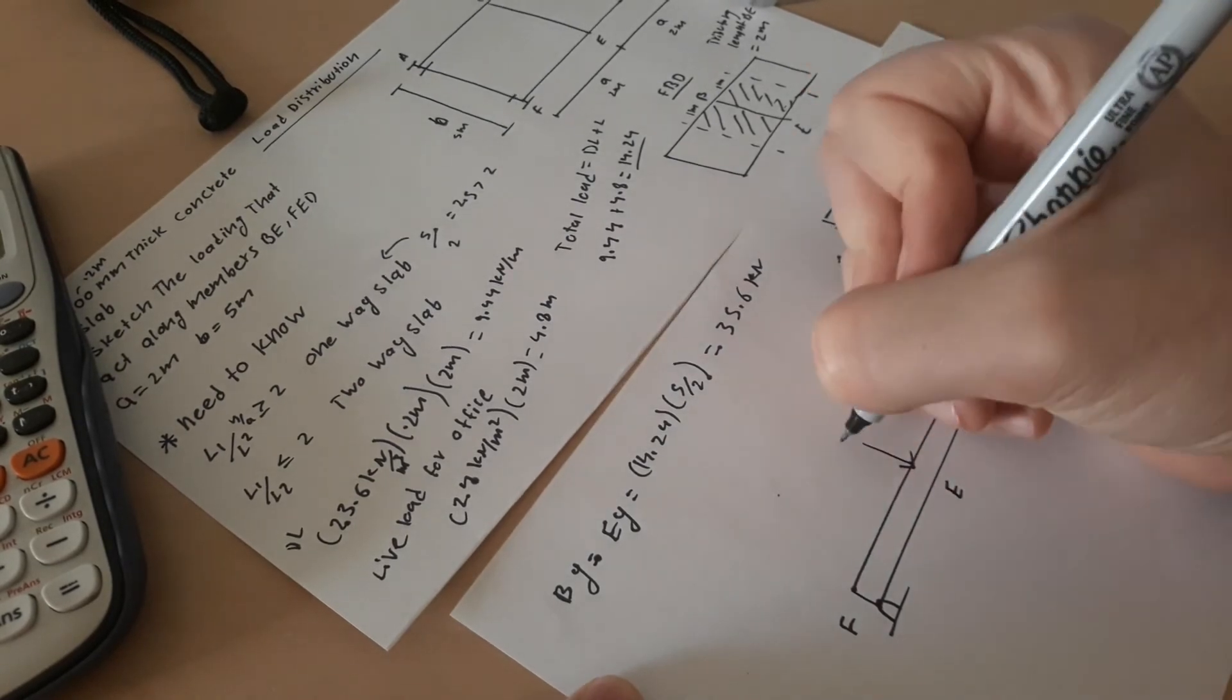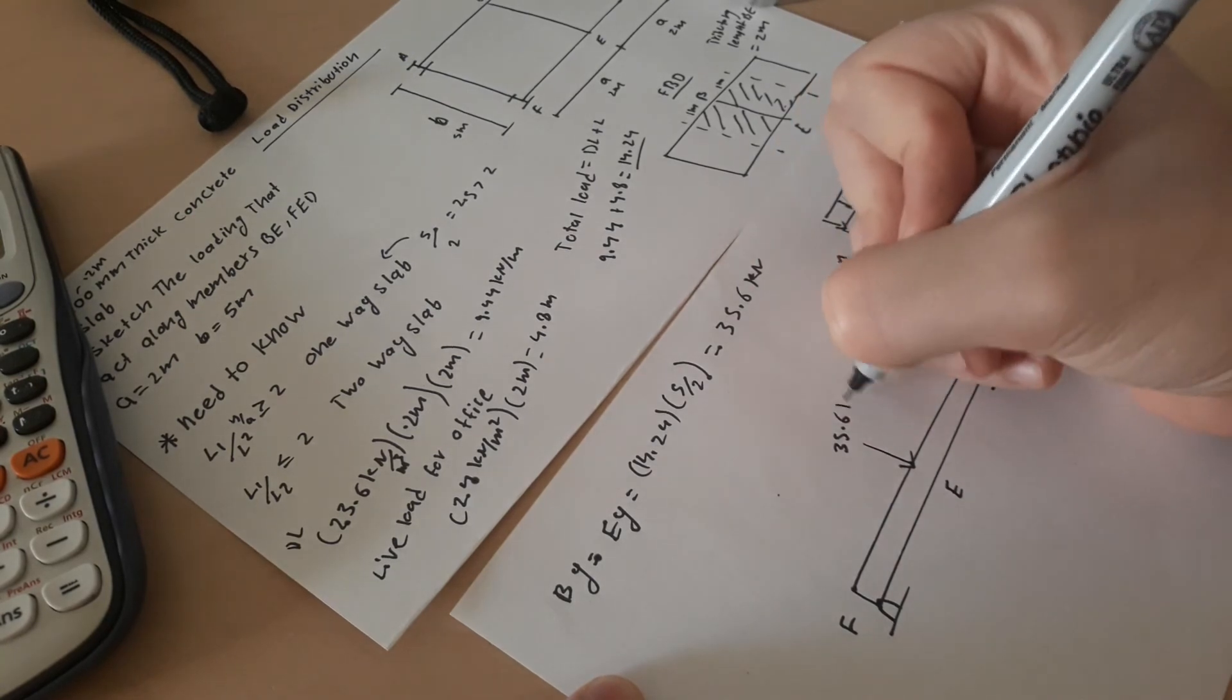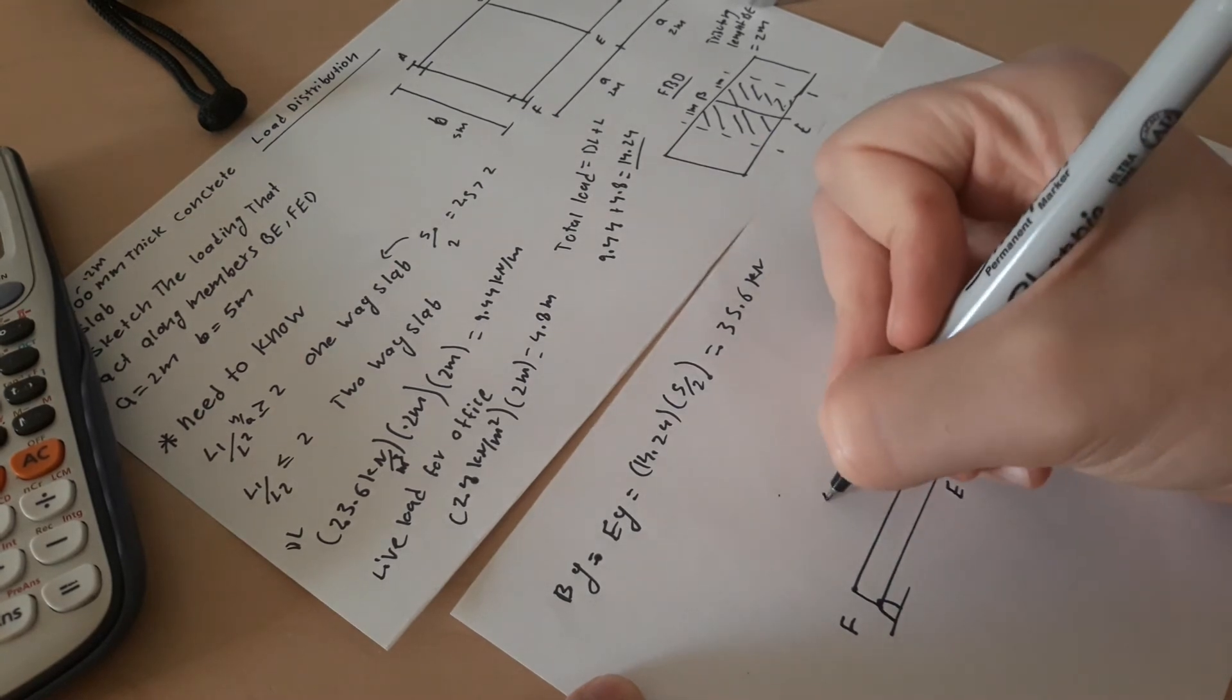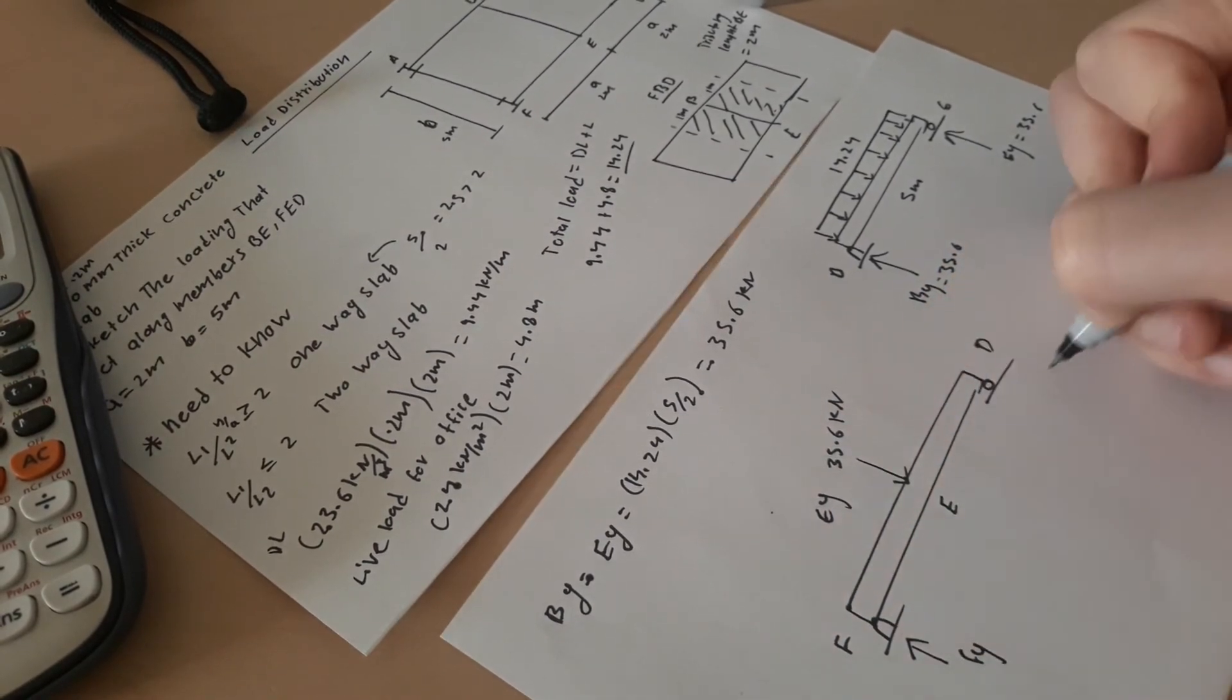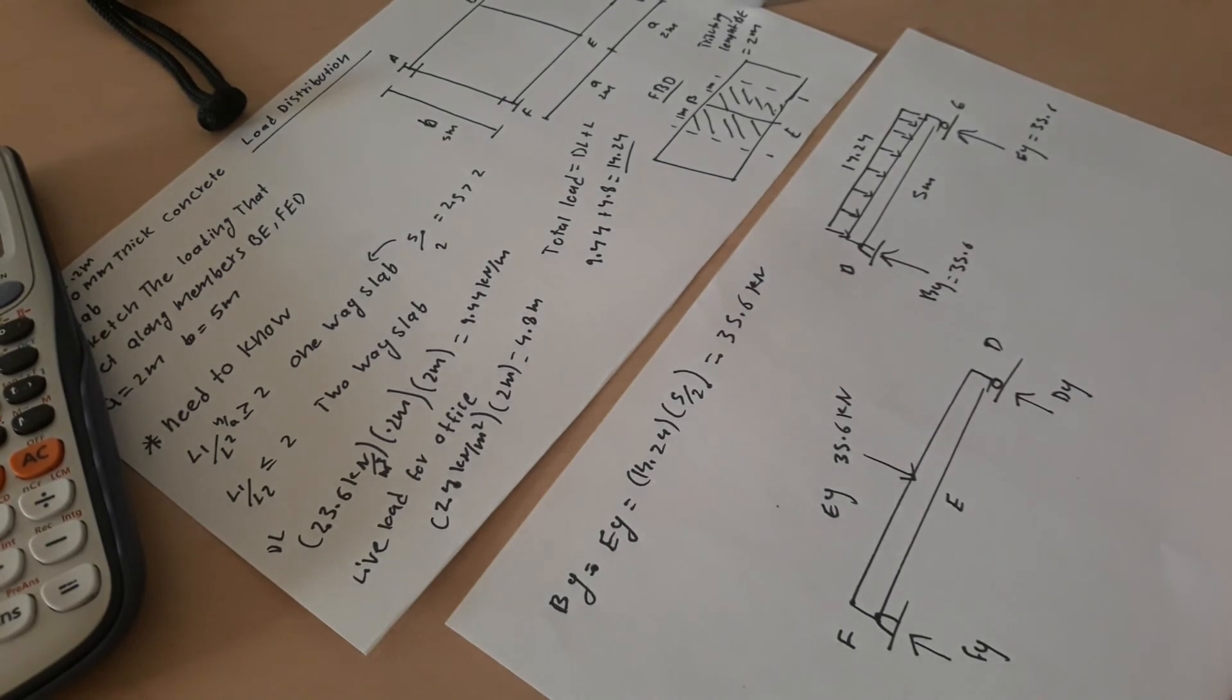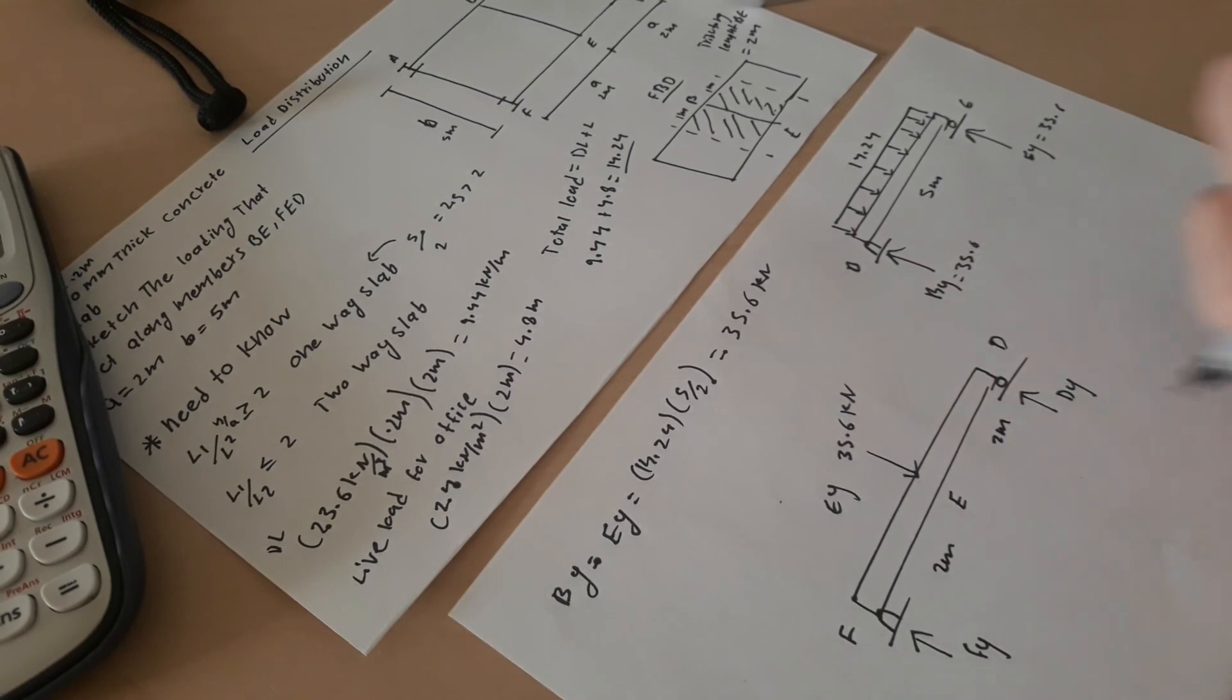And if you want to be exact, we have to calculate Fy and Dy by multiplying it by 4, because here's 2 meter and 2 meter. But it's not necessary, and this is the final solution. So the final solution is this one and this one.